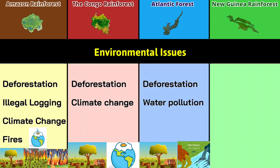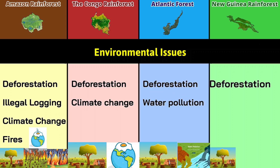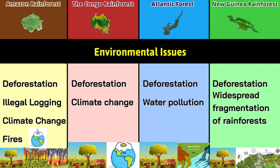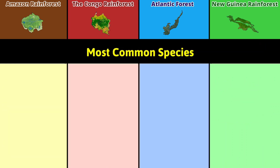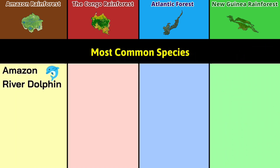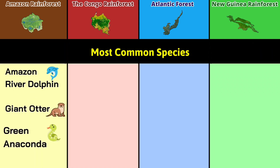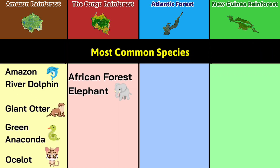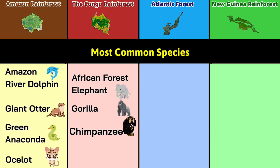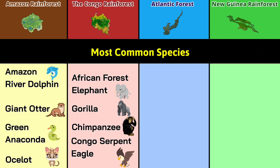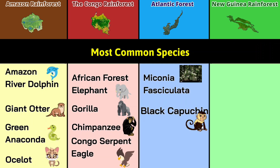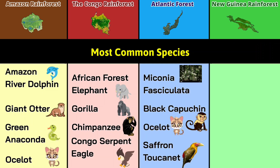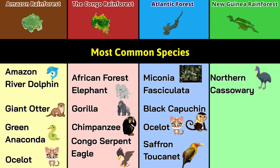Environmental issues: deforestation, illegal logging, climate change and fires; deforestation and climate change; deforestation and water pollution; and deforestation with widespread fragmentation of rainforest. Most common species — Amazon: Amazon river dolphin, giant otter, green anaconda, and ocelot. Congo: African forest elephant, gorilla, chimpanzee, and Congo serpent eagle.